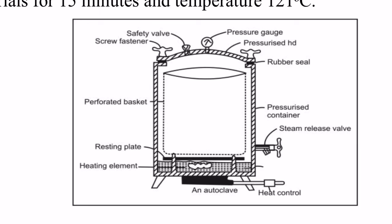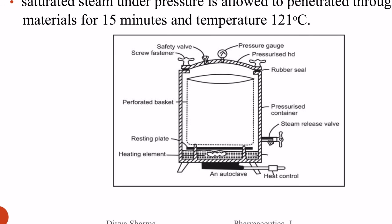The heating element heats the water, then vapors go up. If we have a perforated basket with our material and glassware inside, the steam will penetrate them. If there are bacteria or microorganisms present, steam will penetrate their cell walls and destroy them, because the steam temperature is very high. We keep the material in the perforated basket, turn it on, and when the heating element heats up, vapors rise under pressure for at least 15 minutes at 121 degrees Celsius.